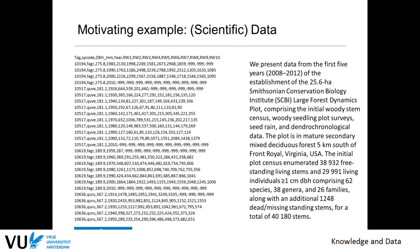Here is the description that accompanies it. It's from an initial census for a large forest plot to understand the dynamics of tree development depending on climate change, using data from the first five years of the establishment of the Smithsonian Conservation Biology Institute. This gives context — when you read that the initial plot census enumerates 38,000 freestanding stems and individual trees comprising 62 species, you start making sense of the data. Knowledge is important so that you can make sense of data and turn it into information that can be useful.